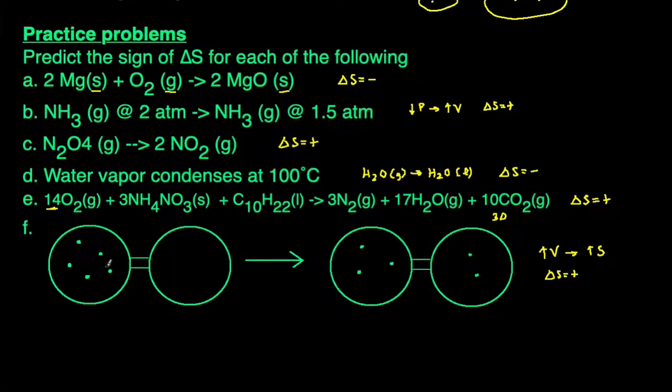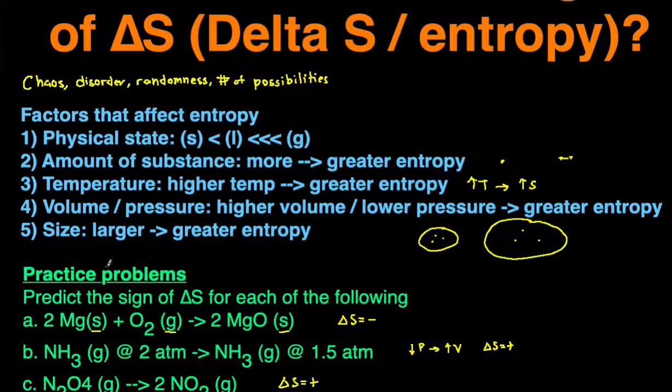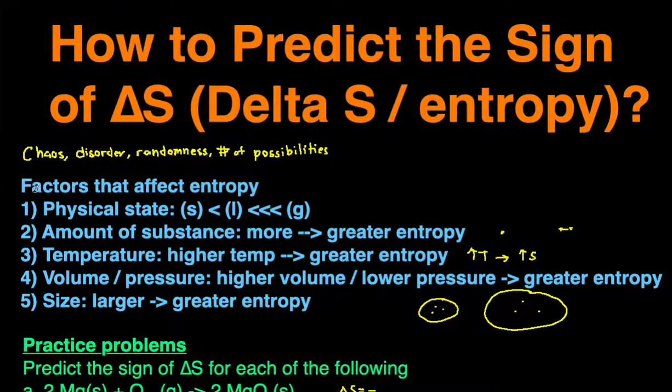And there you go, we just went over five practice problems to predict the signs of delta S. When you get a problem, you can just think back to these factors that affect entropy and that can help you predict the sign of delta S.